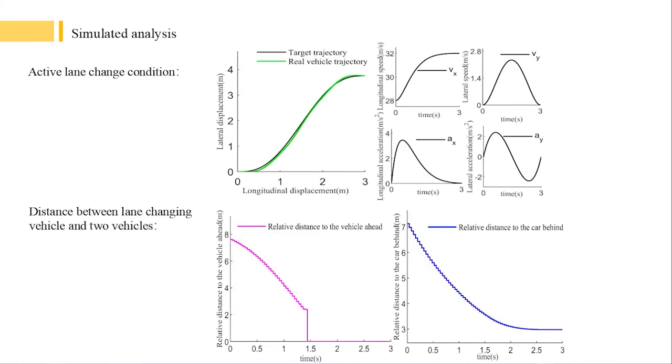When avoiding obstacles and changing lanes, this article mainly considers the collision between the vehicle in front of the current lane and the vehicle behind the target lane. The initial distance between the vehicle in front of the current lane and the vehicle is 7.8 meters.